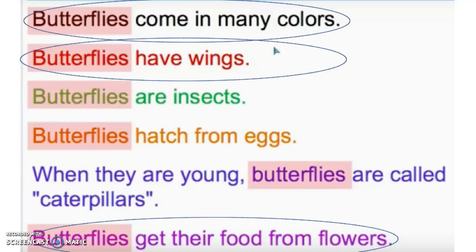So I found three key details about butterflies in this short passage. When you are finding key details, you want to make sure that you're finding those details in the book or the text, the passage that you're reading. Have fun as you continue learning more and practicing with key details. Bye-bye.